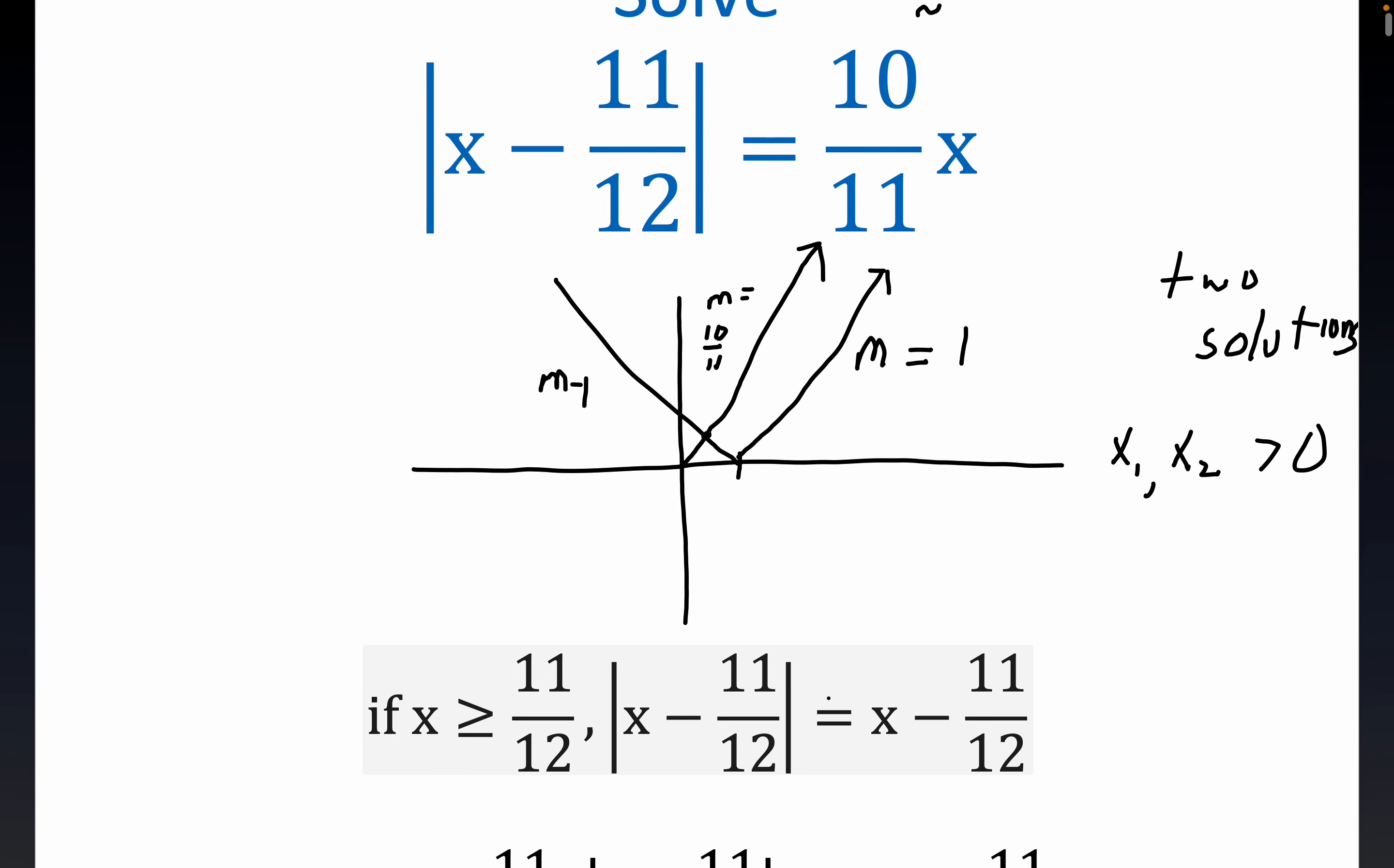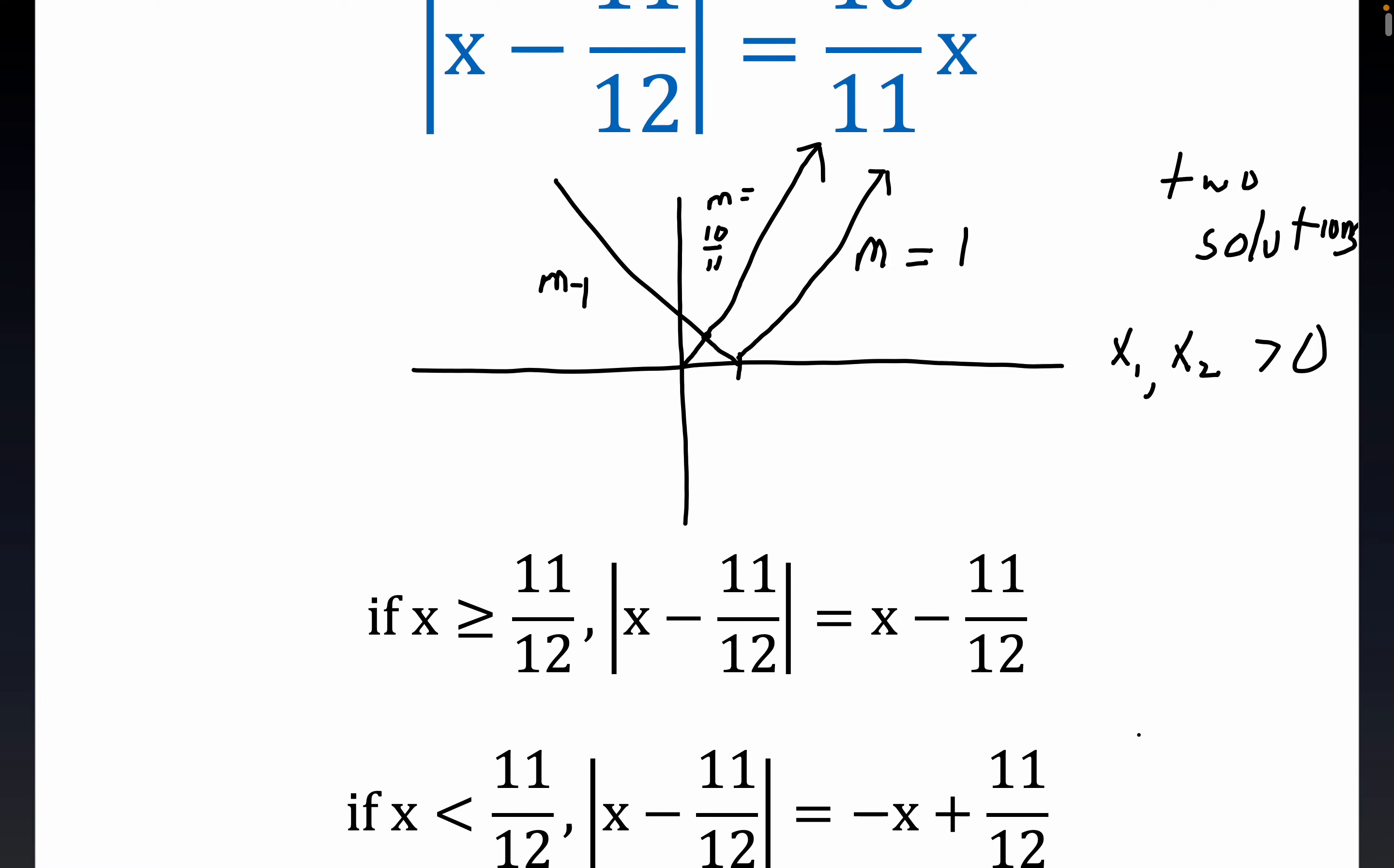All right, folks, so again, this all just follows from the standard definition of absolute value. If the input argument to the absolute value is positive, then the absolute value of the input argument is the input argument. And that's what we have right here. If x is greater than or equal to 11 twelfths, which would be this part over here to the right, the absolute value of x minus 11 twelfths is x minus 11 twelfths.